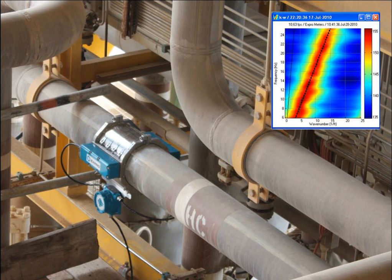Flow measurement is the quantification of bulk fluid movement. Flow can be measured in a variety of ways. The common types of flow meters with industrial applications are listed below.